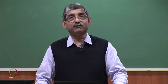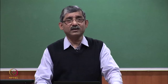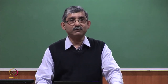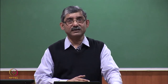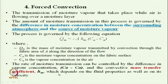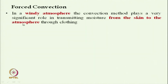The next mechanism is forced convection. Forced convection of moisture vapor takes place in the presence of air. As air velocity increases, the mass transfer coefficient h_m increases. This convective moisture vapor transmission is a function of area and vapor pressure also, but the major effect is on the mass transfer coefficient. In a windy atmosphere, the convection method plays a very significant role in transferring moisture from the skin to the atmosphere through the clothing.